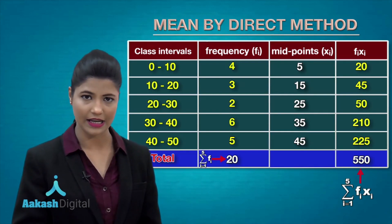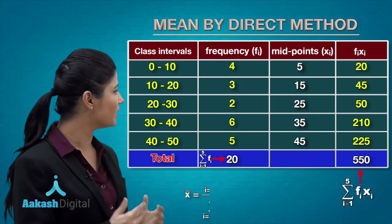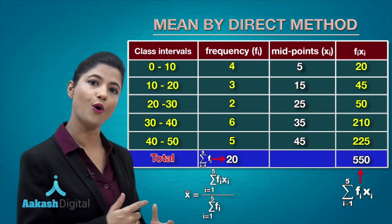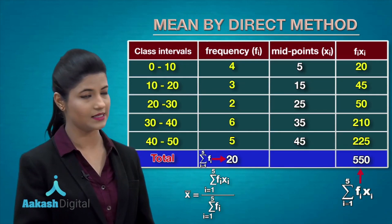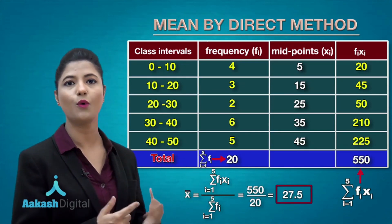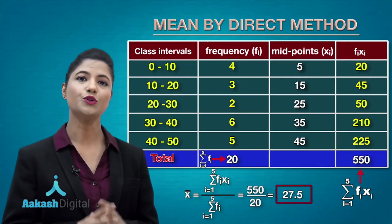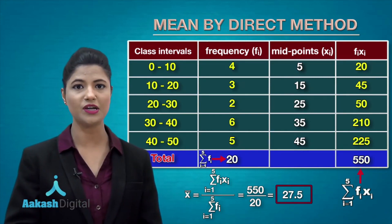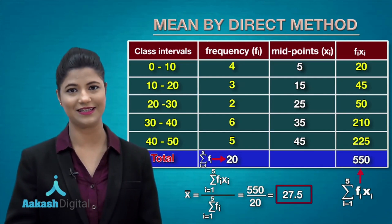You then obtain the mean using the direct method, given by the formula x̄ = Σfᵢxᵢ / Σfᵢ, where i is from 1 to 5 since we have 5 classes. Dividing the sum by the sum total of all frequencies gives the final mean of the data set. In this way, you can use the direct method to solve various questions related to finding the mean. Thank you for watching.